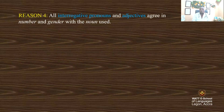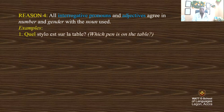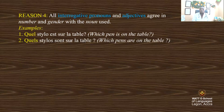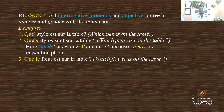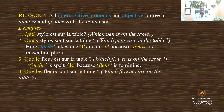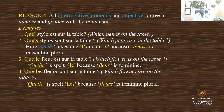Reason four: all interrogative pronouns and adjectives agree in number and gender with the noun used. Examples: 'quel stylo est sur la table?' — which pen is on the table? Since stylo is masculine singular, 'quel' stays as is. 'Quels stylos sont sur la table?' — which pens are on the table? An S is added because stylo is masculine plural. 'Quelle fleur est sur la table?' — 'quelle' is spelled with double L and E because flower is feminine. 'Quelles fleurs sont sur la table?' — 'quelles' is spelled with double L, E, S because flower is feminine plural.